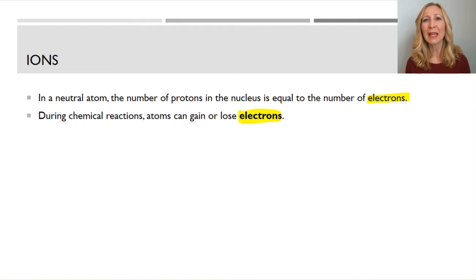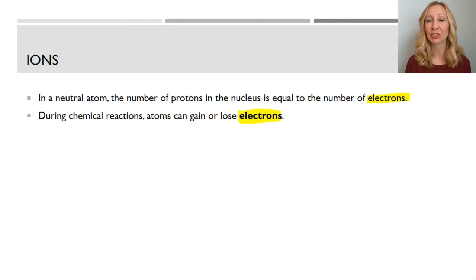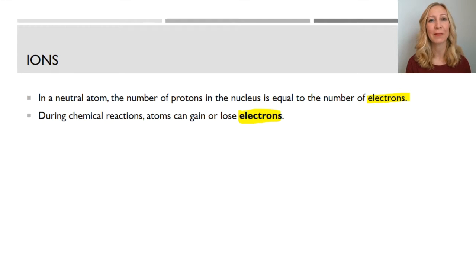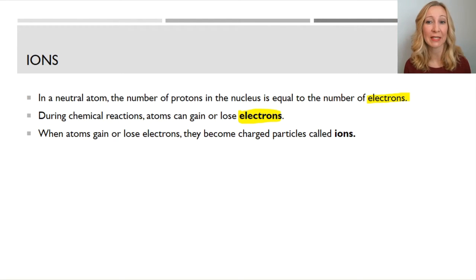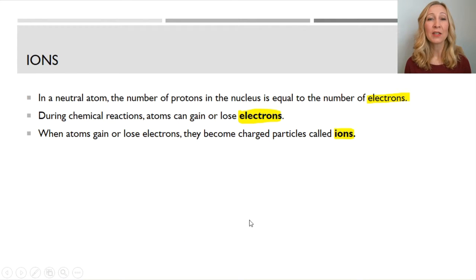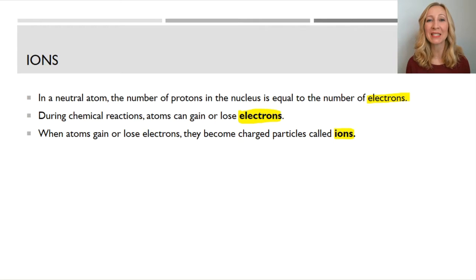So if an atom gains electrons, it will become negatively charged, because electrons are negative. And if an atom loses electrons, it will become positively charged, because it's losing something that's negative. When an atom gains or loses electrons, it becomes a charged particle, and it's not technically called an atom anymore — it's called an ion.